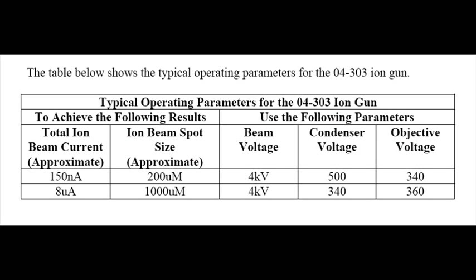This table shows some typical parameters for the ion source. With the condenser at the max of 5.0, you get the smallest beam size of about 200 microns and about 150 nanoamps of total current. The other extreme with the condenser at approximately 3.4, you'll get about a 1 mm spot size and current anywhere between 5 to 8 microamps. This will vary from source to source.